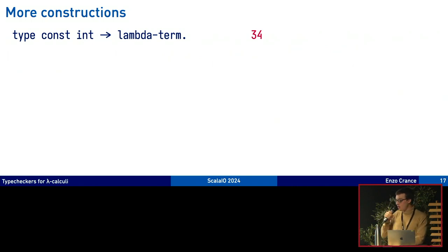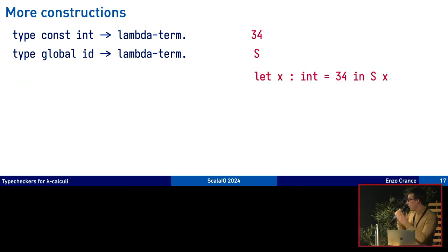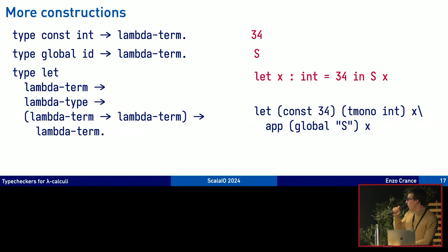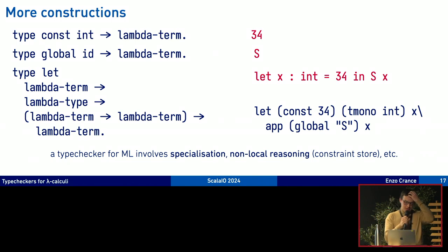We can add more constructions to our language such as having constant integers or global references such as the successor function for natural numbers. If we want to encode other constructions like a let binding, it's also possible in HOAS here involving a function again. The let binding here binds X to 34 and then we can use the variable X at the meta level to express the right hand side. I don't have time for the whole technical details because I also want to talk about proof transfer.